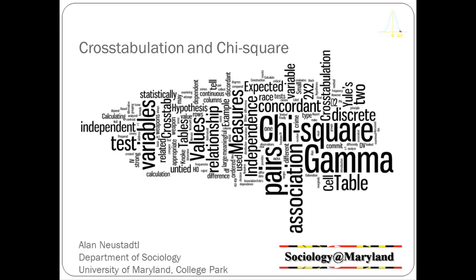In this video we're going to complete our look at cross tabulation by looking at one more measure of association — gamma — and then we're going to look at what's called elaboration or post hoc statistical control as an advanced topic, but something you're going to want to learn more about when you take the next course in statistics or methodology.